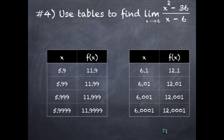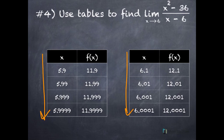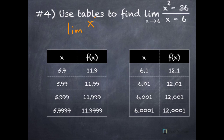Next, find the limit of (x² − 36) / (x − 6) as x approaches 6. Approaching 6 from the left and from the right, the y values in the first table are getting closer and closer to 12, and in the second table also getting closer and closer to 12. So the limit of (x² − 36) / (x − 6) as x approaches 6 is equal to 12 — as x gets closer to 6, y is getting closer to 12.